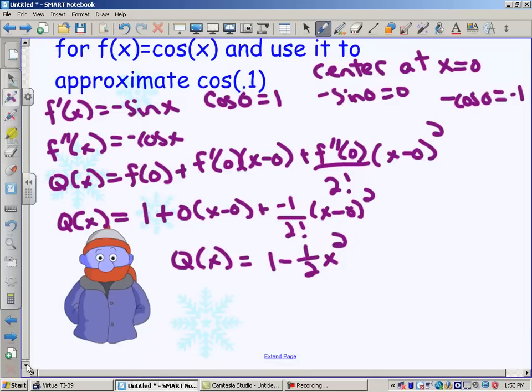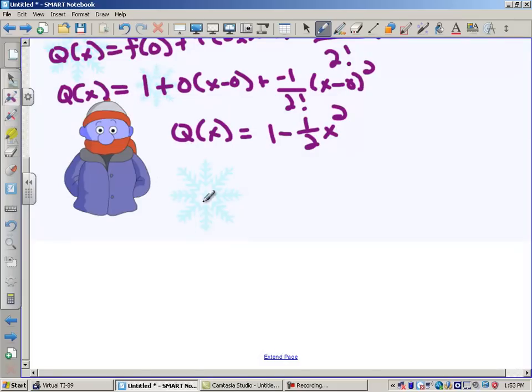So there we've built it. Now we're going to use it to approximate cosine of 0.1. So we're going to say that the cosine of x is approximately equal to the quadratic approximation of x, which is equal to 1 minus 1 half x squared.